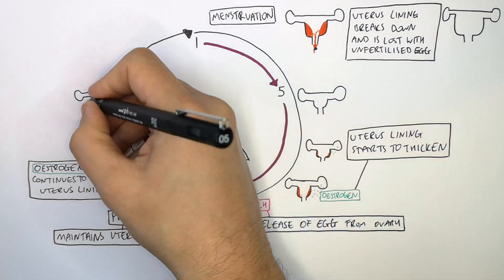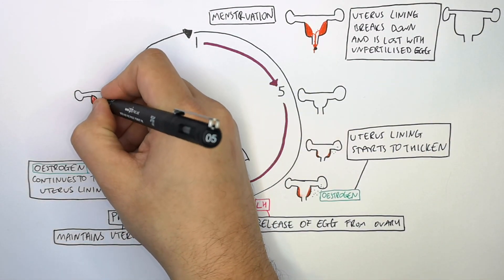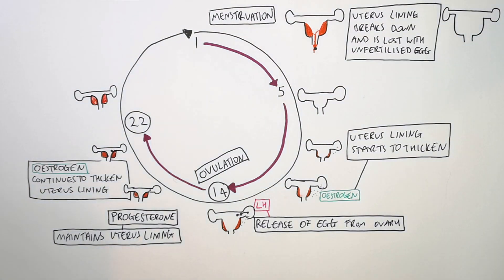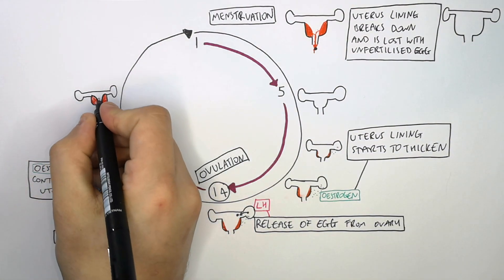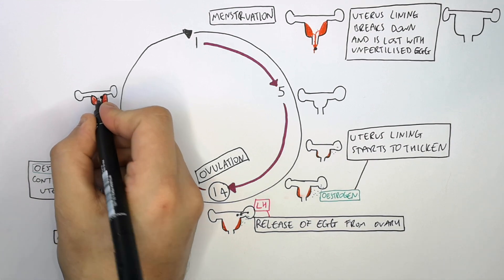Progesterone is important because it maintains the uterus lining's thickness. That means a fertilised egg, when it becomes an embryo, can then embed on the uterus lining in the uterus.